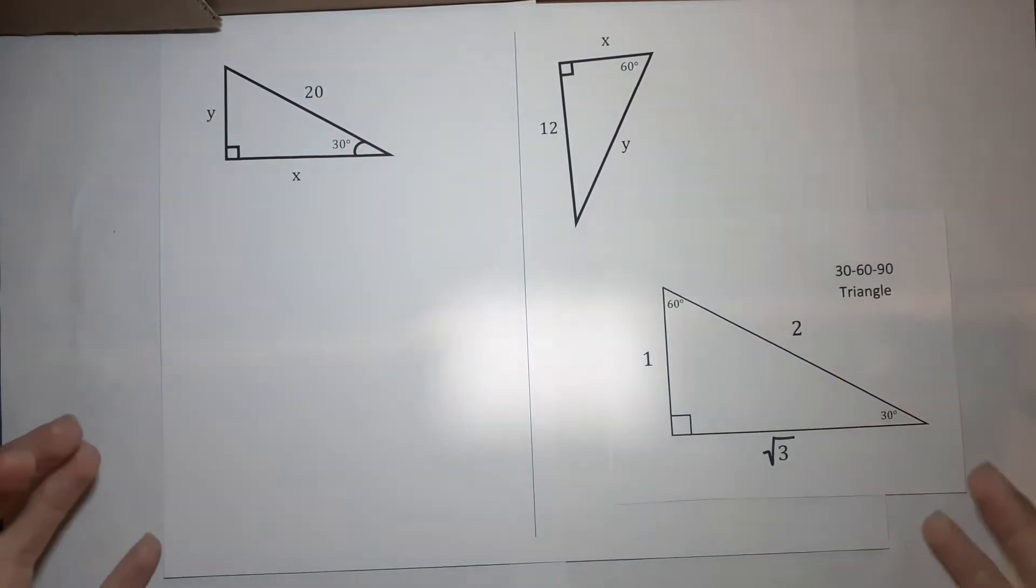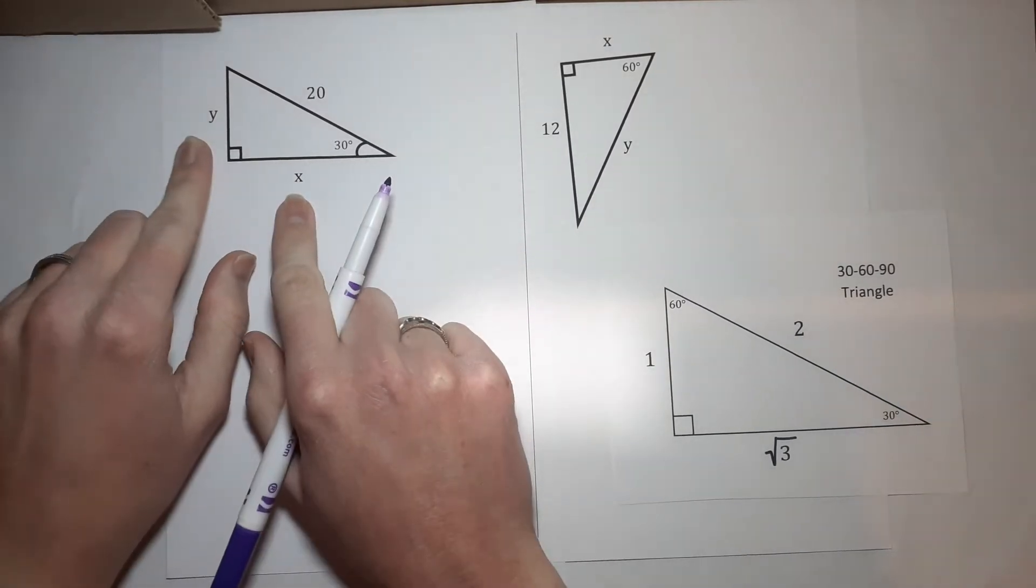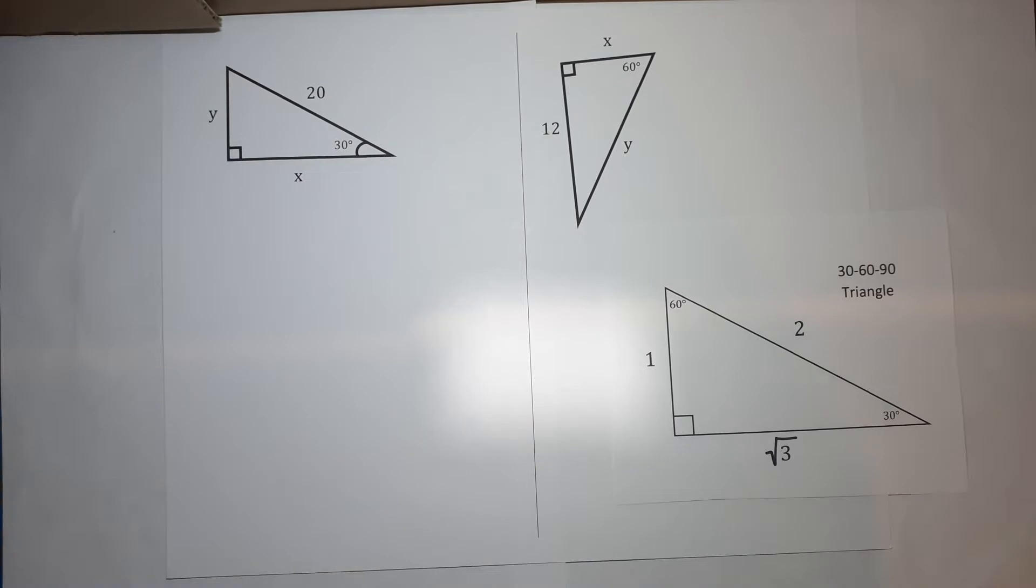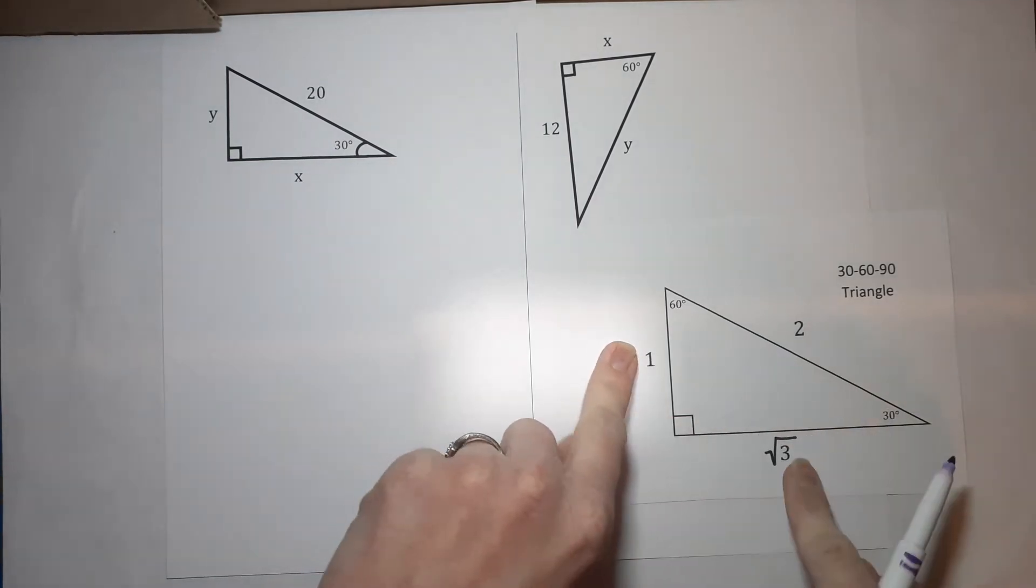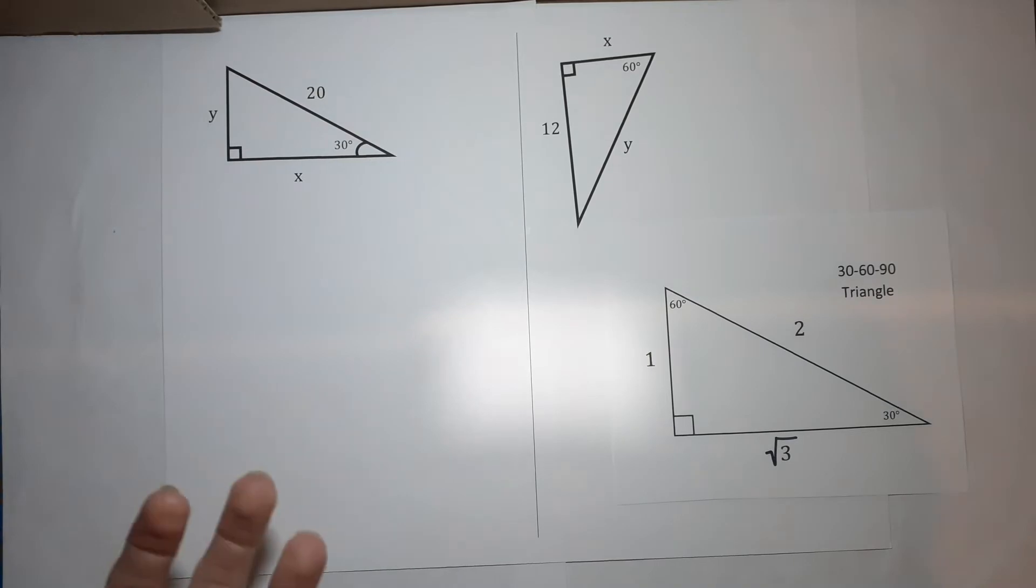We want to know what these two numbers are. What I like to do first is label what the sides are. It's basically in their simplest form.